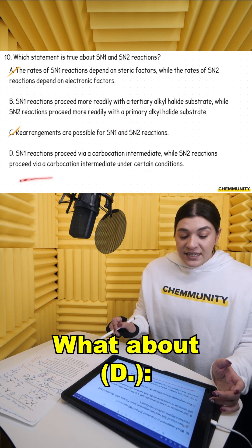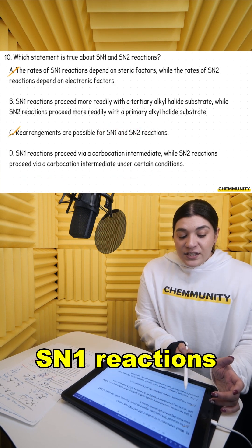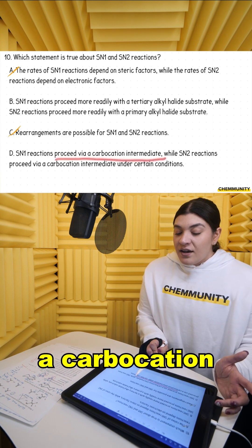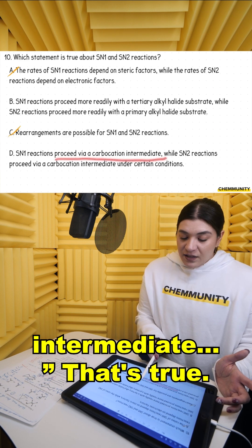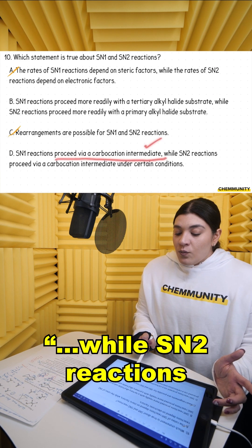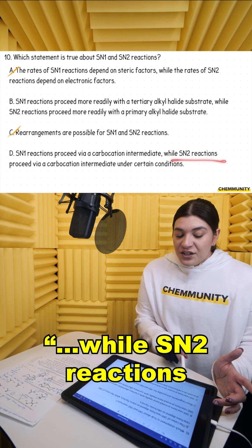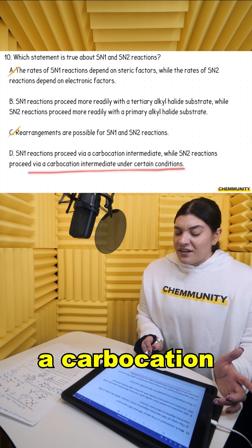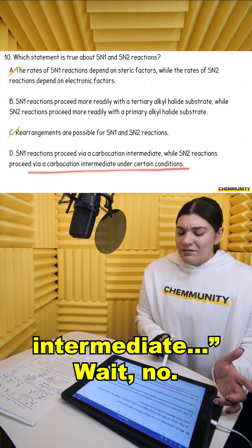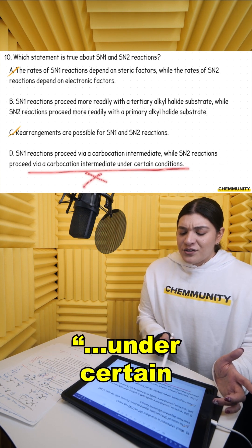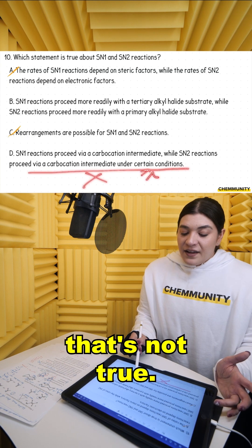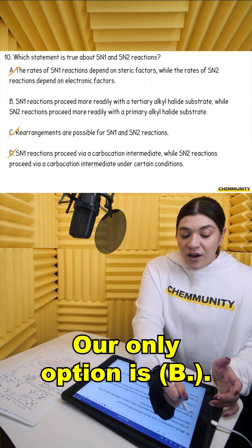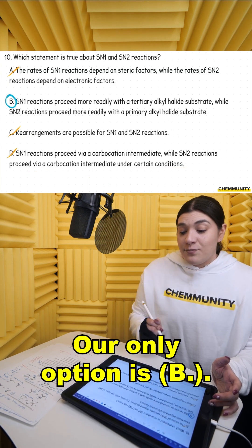What about D? SN1 reactions proceed via a carbocation intermediate — that's true. While SN2 reactions proceed via a carbocation intermediate? No, that's not true — not under any conditions. Our only option is B.